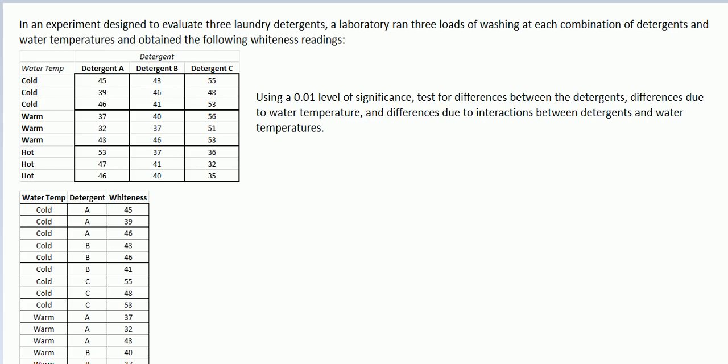So let's read this example together and familiarize ourselves with the data. There's an experiment designed to evaluate three laundry detergents. A laboratory ran three loads of washing at each combination of detergent — so there's three detergents — and water temperatures. There's going to be three water temperatures. And they obtained the following whiteness reading, which is a numerical variable. A higher number indicates a whiter piece of fabric on the outcome of a wash.